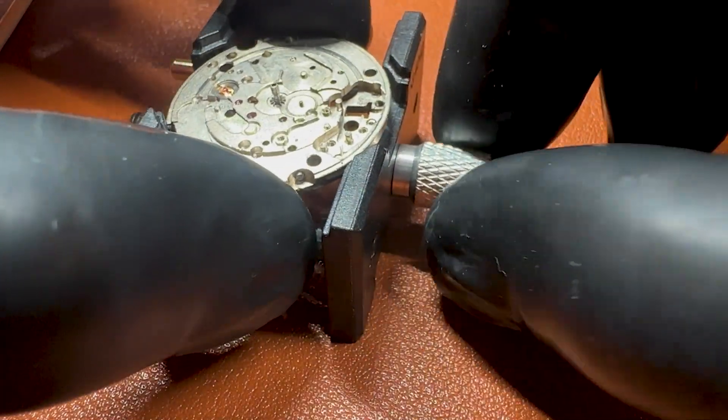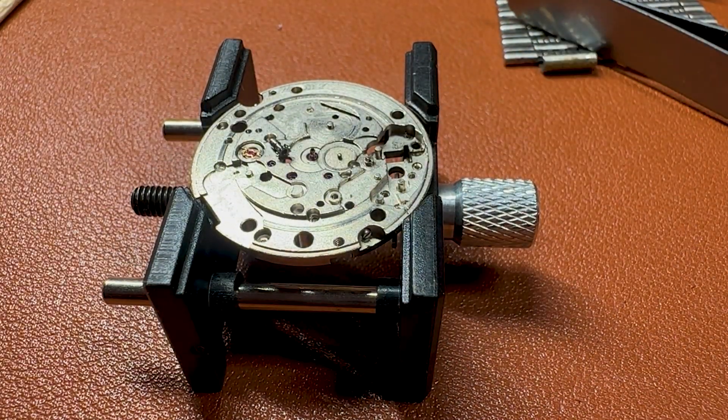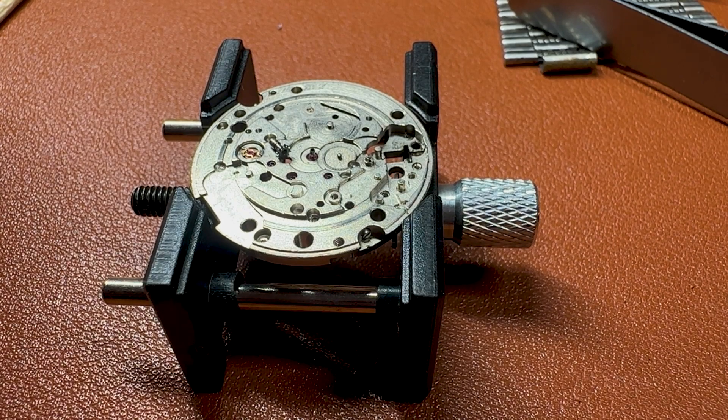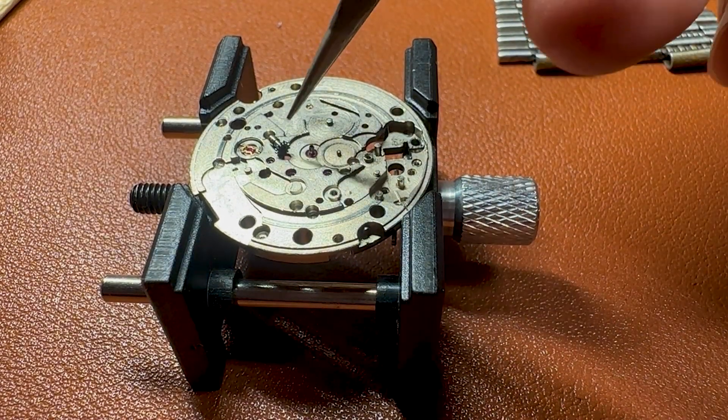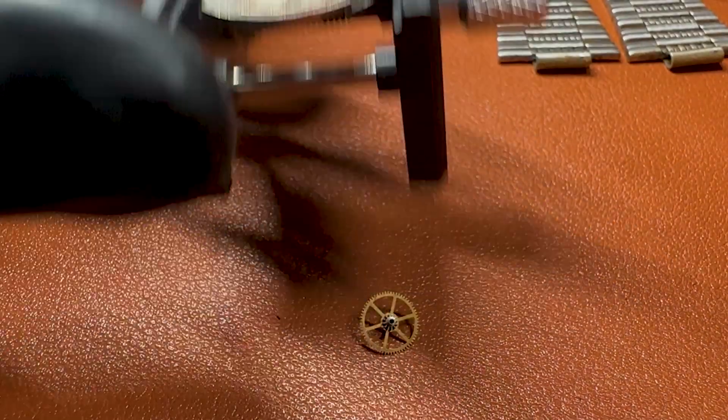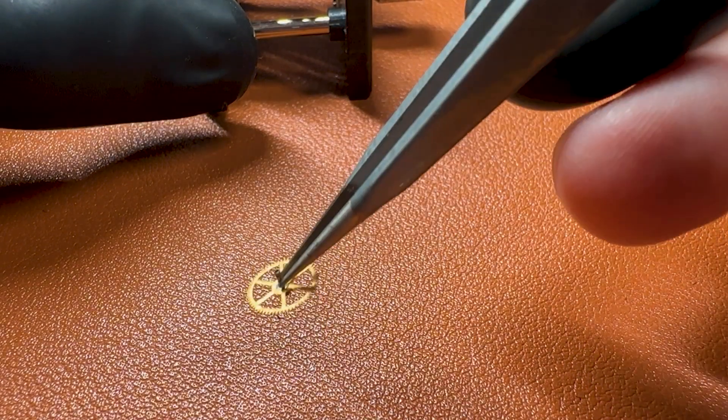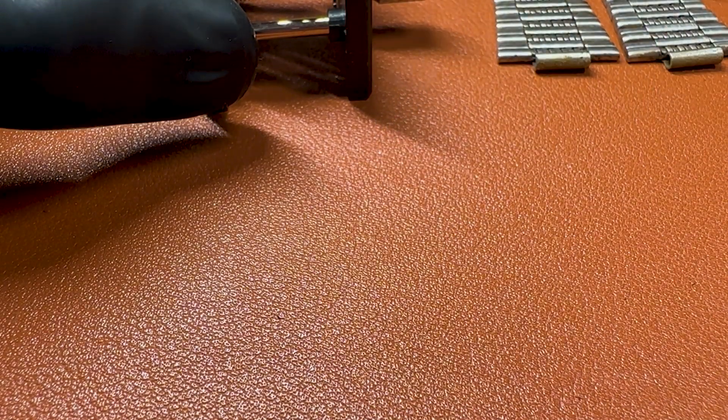Now the final touch, taking out the cannon pinion. Indeed it was not completely united with the center wheel. This is the center wheel and the movement is completely disassembled.